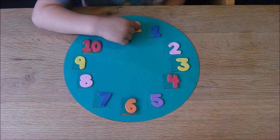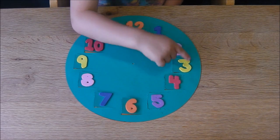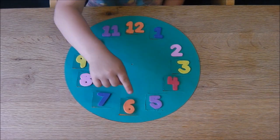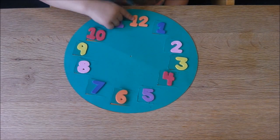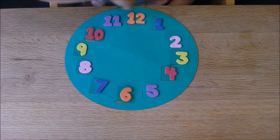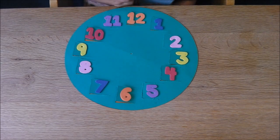It starts at 12 and then it goes 1, 2, 3, 4, 5, 6, 7, 8, 9, 10, 11, and then back to 12 again. Around and around and around. Time keeps going on, even in the night time.